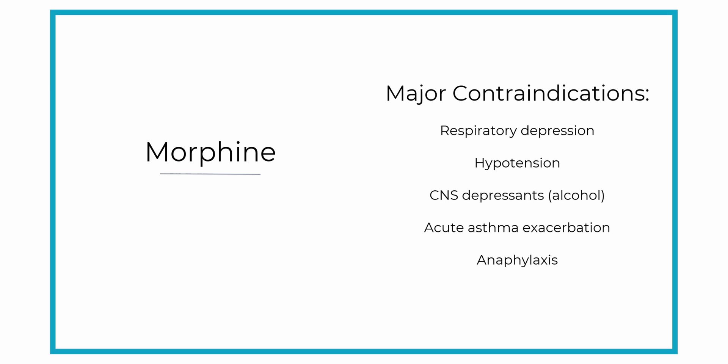Since morphine causes vasodilation which lowers blood pressure, you wouldn't want to give it if the patient's blood pressure was already low. So hypotension is another contraindication for morphine.